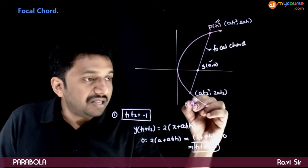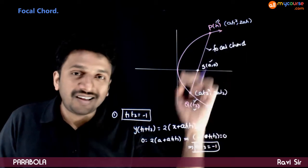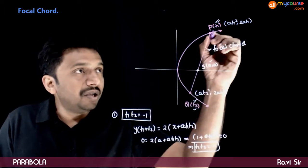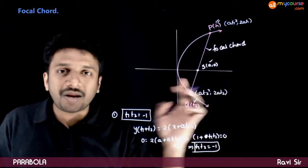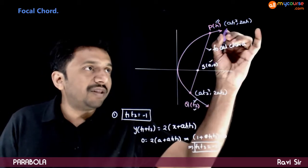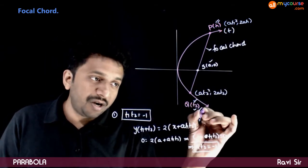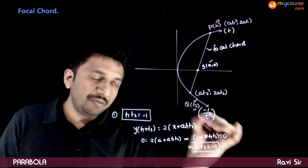That means, this t1 and t2 are dependent on each other. That means, you do not need two different parameters for a focal chord. If the parameter of point P is t, the parameter of point Q will directly be equal to minus 1 by t.